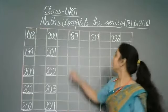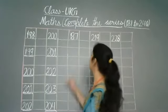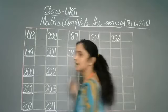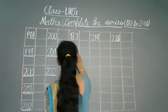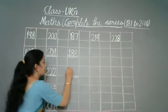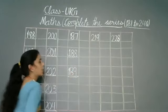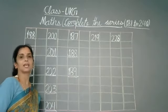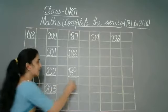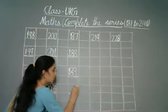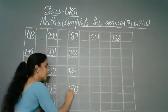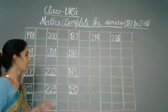Next we have 187. So after eighty-seven comes eighty-eight. The one hundred stays as one hundred, the eight stays as eight, and after seven we write eight. So one hundred eighty-eight. Next, after one hundred eighty-eight comes one hundred eighty-nine.